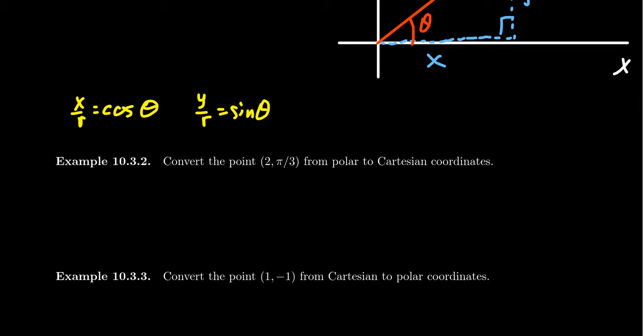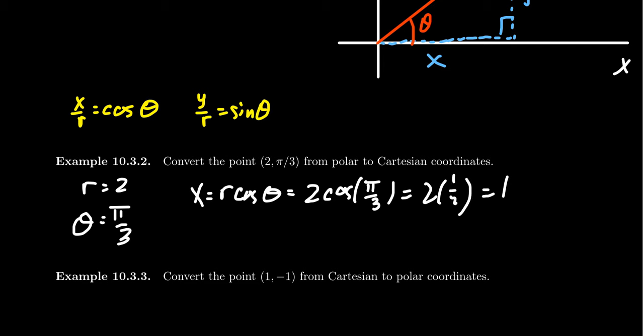Consider for example the polar coordinate 2 comma pi thirds. This is polar and we want it to be Cartesian. We know r equals 2, we know theta equals pi thirds, and we want to find x and y. So x equals r cosine theta, which means it's 2 times cosine of pi thirds. Pi thirds cosine is one half, so you get 2 times one half, giving an x-coordinate of 1.